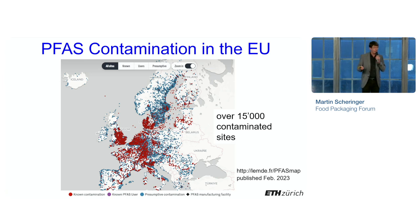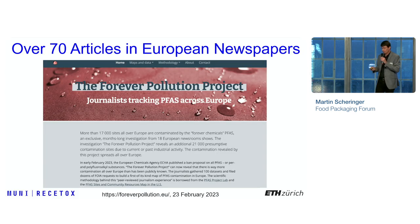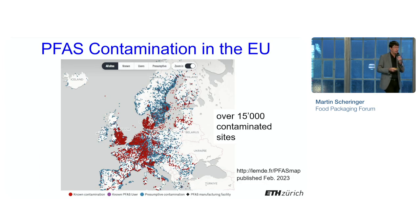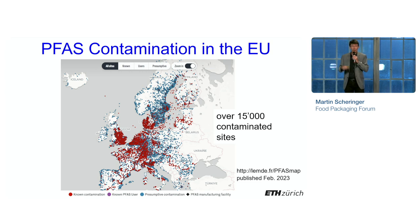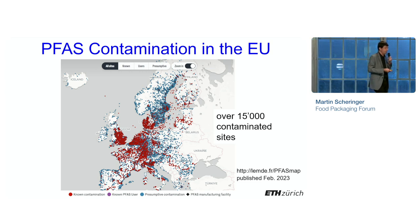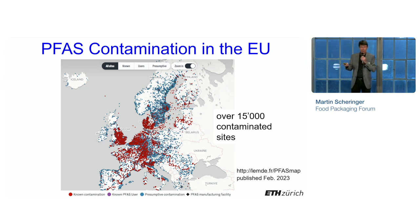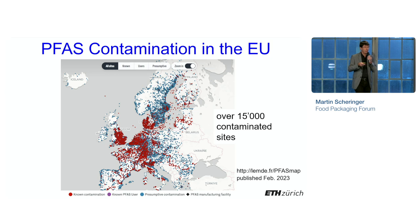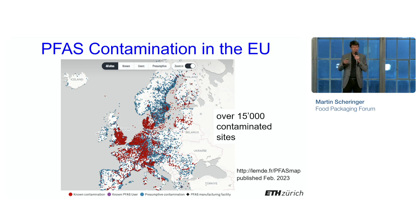Many of you may have seen this map, published earlier this year in February by a consortium of journalists in Europe. The website is foreverpollution.eu. What they did is collect data on PFAS contamination from many different sites in all European countries from the authorities. These are not new data, but what's new is that the data have been harmonized, checked for consistency, and put into this interactive map. You can click on the map, zoom in, and find each location, see the chemicals measured and their concentrations. As you see, it's over 15,000 sites in Europe, and much of this contamination came from the use of PFAS in firefighting foams for jet fuels.